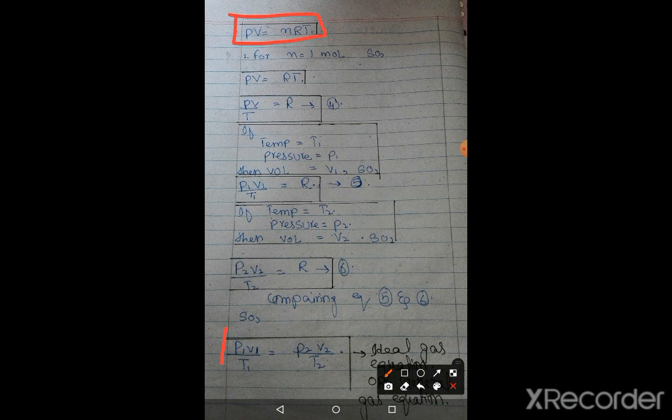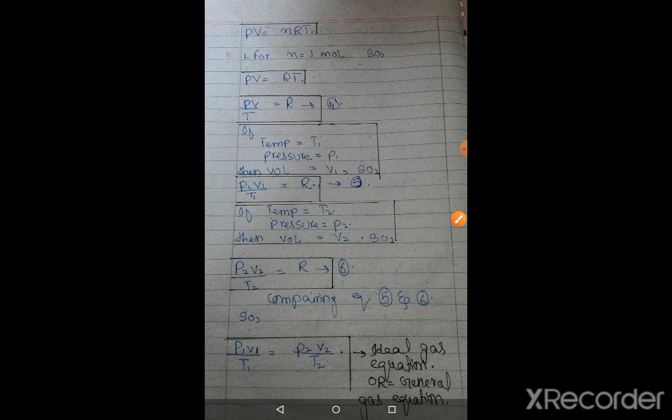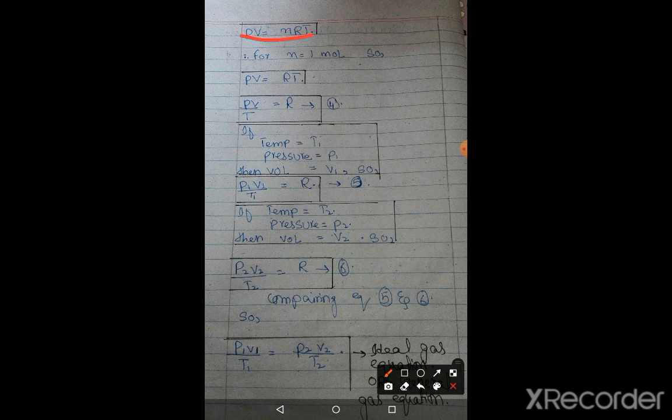PV is equal to nRT, which is our equation. This equation is used to solve our numerical problems in gas equations. But mostly we use this form. Friends, you can see. Let's suppose we take number of moles as one, n is equal to one mole. Then PV is equal to RT. If we need the constant value, the universal gas constant, then P is multiplying here, so it will divide. PV upon T is equal to R.